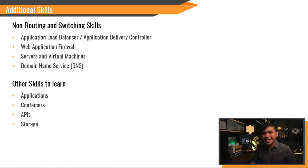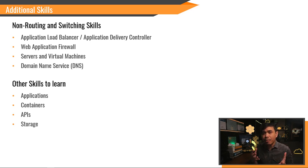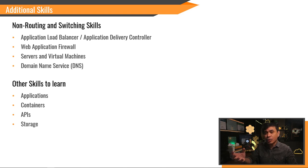Non-routing and switching skills. As a network engineer, you probably know how to manage routers and switches, but there are other technologies that are highly valuable for managing the cloud. One of the most important is the Application Load Balancer — sometimes called ADC or Application Delivery Controller, like F5 Big-IP — which does application load balancing associated to servers, network, and policies. Next, web application firewall (WAF). If you are already familiar with application load balancing, it's also advantageous to understand WAF, a service or module associated to your ADC that is designed to protect your web applications and APIs. You are moving into cybersecurity — not bad!